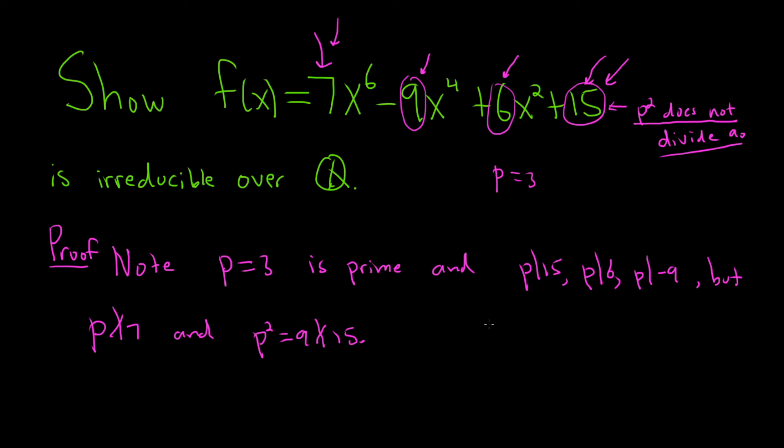So we found a prime number that divides each of the circled ones, doesn't divide the leading coefficient, and p squared doesn't divide the constant term.